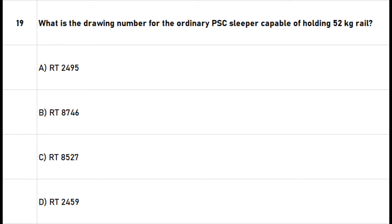Question 19: What is the drawing number for the ordinary PSC sleeper capable of holding a 52 kg rail? A. RT 2495. B. RT 8746. C. RT 8527. D. RT 2459. The right answer is option A: RT 2495.